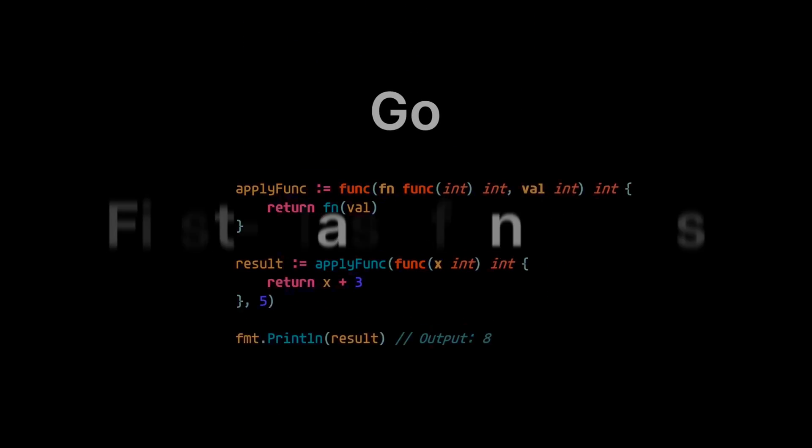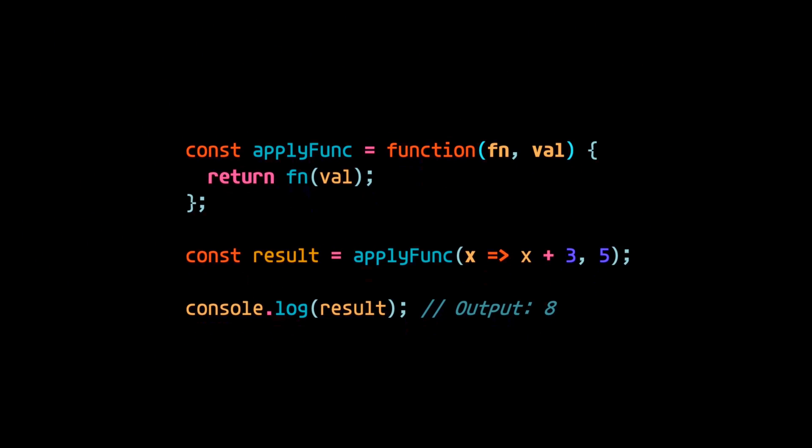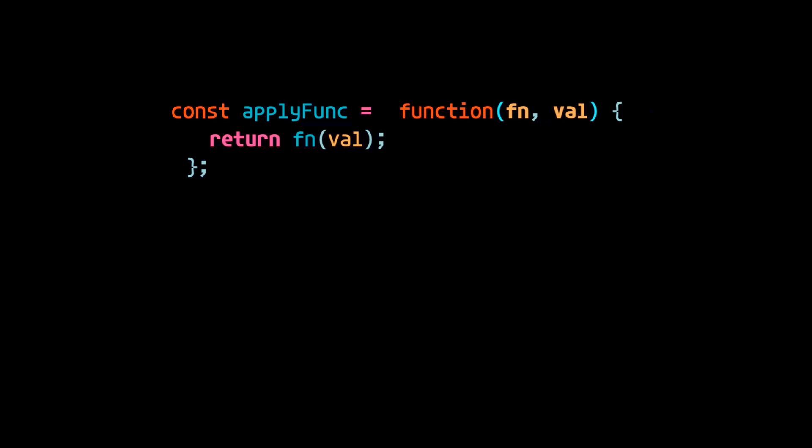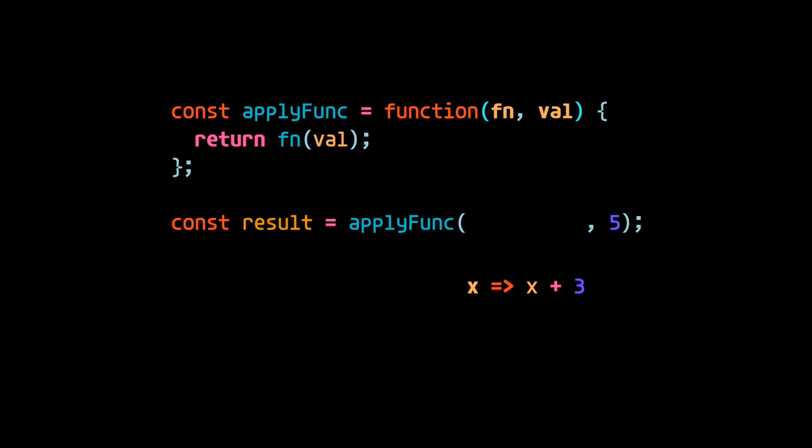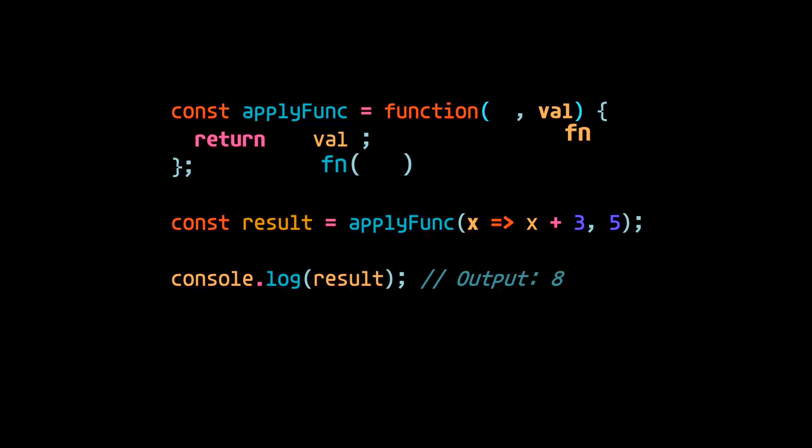Some languages have what are known as first-class functions. In JavaScript, for example, functions can be assigned to variables, passed around as arguments, and returned from other functions, making them first-class citizens. So we can create a function that takes in a function as an argument, and from the top level function, we can call the function that was passed in.